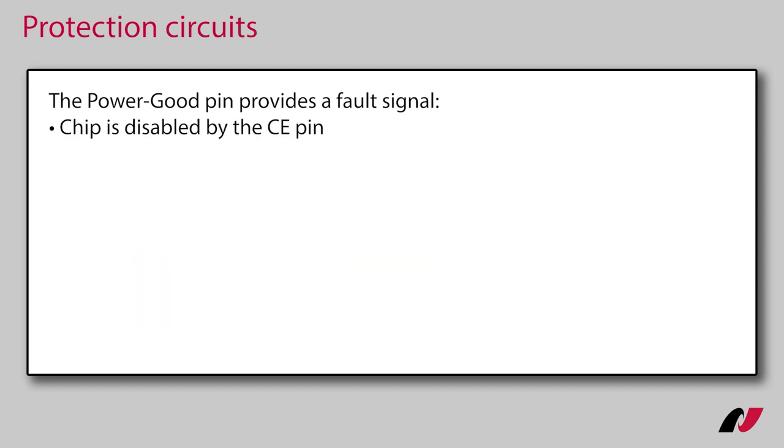When the chip is disabled by the chip enable pin. When the input voltage drops below 3.3V or rises above 35V and the undervoltage or overvoltage detection becomes active.